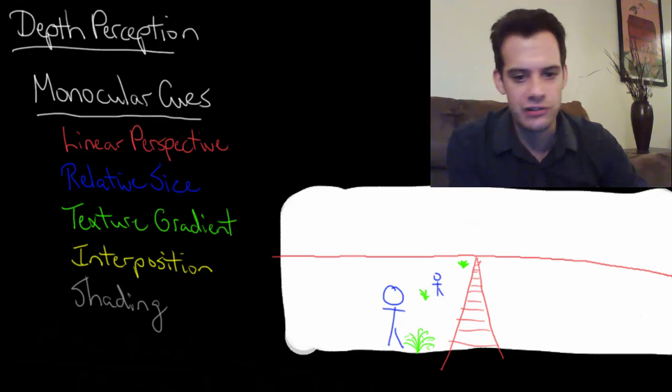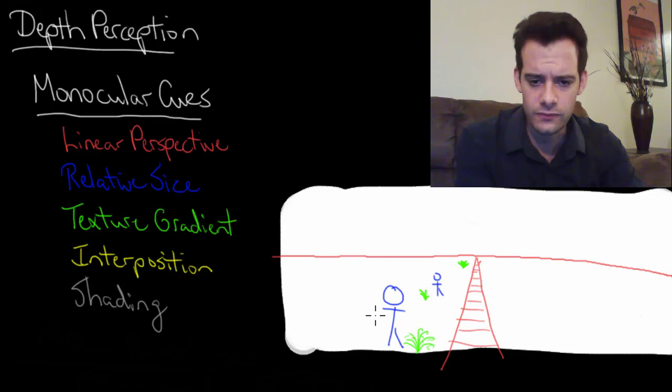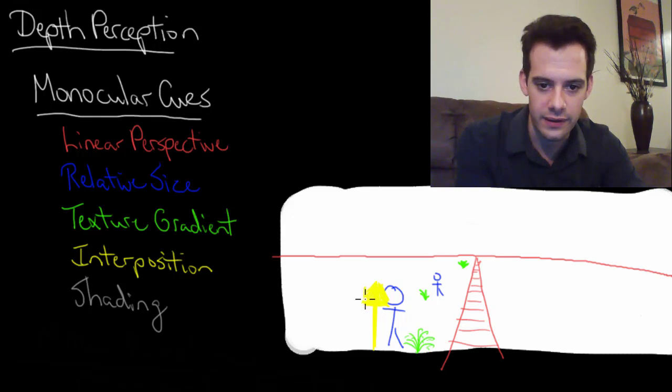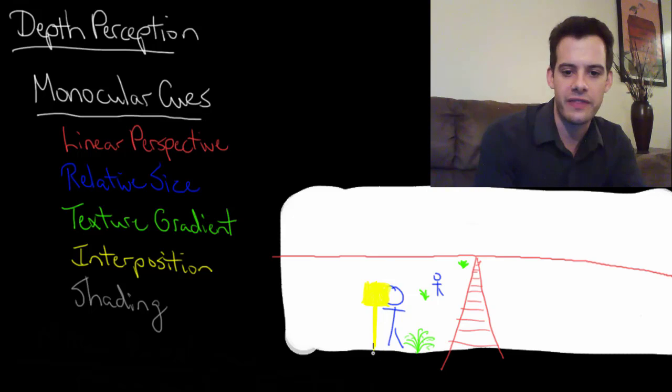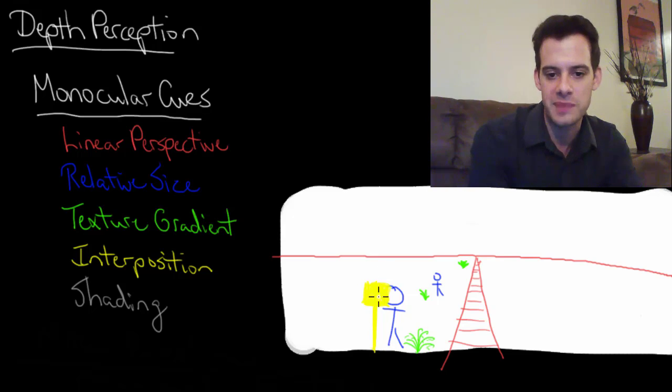Now we'll add some interposition here. So let's just add some sign here in front of this guy's face. When we look at this we're going to assume that this sign is closer to us because it's blocking our view of this guy here. And so that tells us something about the depth.